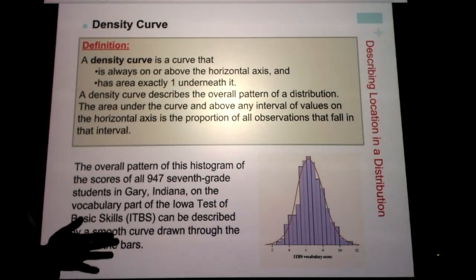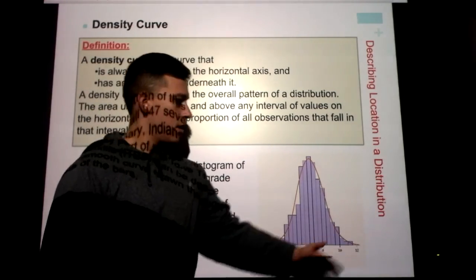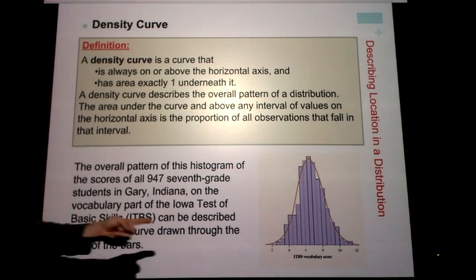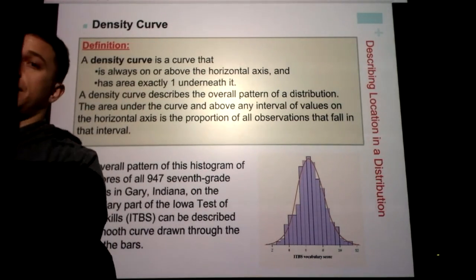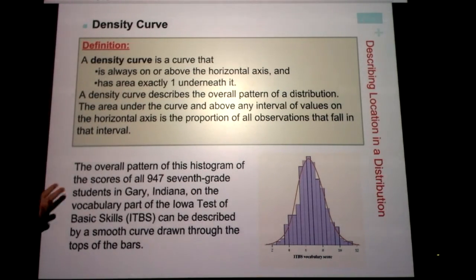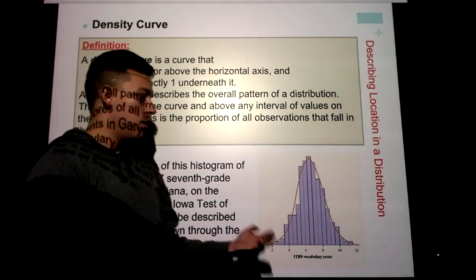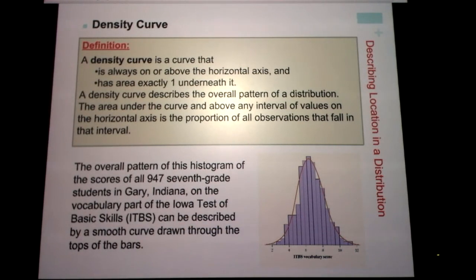The area under the density curve is 1 — in other words, 100% of the data lies beneath that curve. The density curve describes the overall pattern of a distribution, and the area under the curve above any interval equals the proportion of observations in that interval. For example, the overall pattern of scores from 947 seventh-grade students in Gary, Indiana on the vocabulary part of the Iowa Test of Basic Skills can be described by a smooth curve drawn through the tops of the histogram bars — it looks like a bell curve.